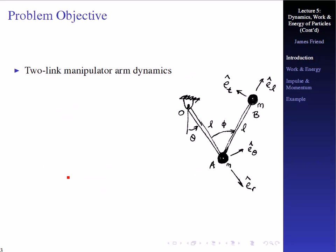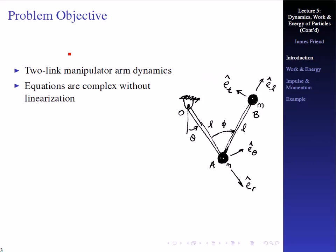As an example, we might take a look at manipulator arm dynamics in a horizontal plane. We don't have to worry about gravity here, but we do have two masses M and M — both the same mass — and what we're looking for is how it behaves. The equations that would describe this motion are complex even without linearization. The motion of the first mass is nonlinear, and the motion of the second mass with regard to the first mass is nonlinear as well. The motion of the second mass with respect to a fixed coordinate system is going to be especially nonlinear.